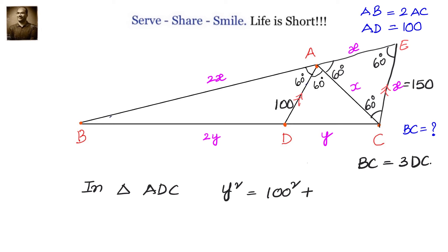In triangle ADC by applying law of cosines we have DC square equals AD square plus AC square minus 2 into AD into AC into cos of DAC which is 100 square plus 150 square minus 2 into 100 into 150 into cos of 60 degrees.